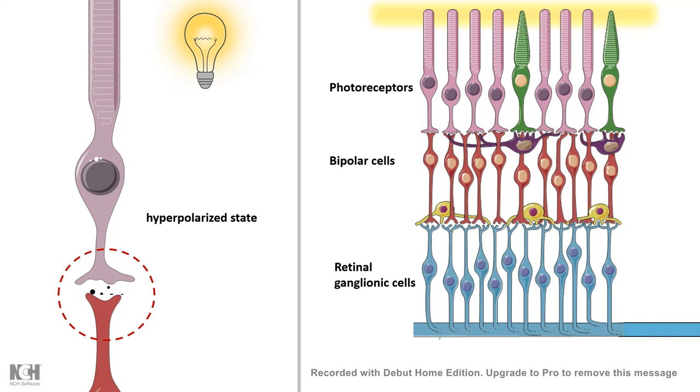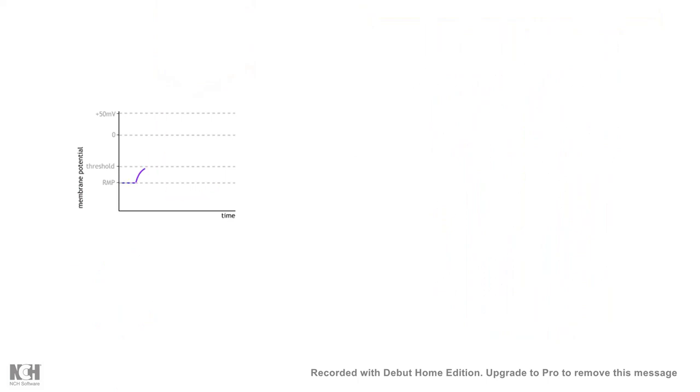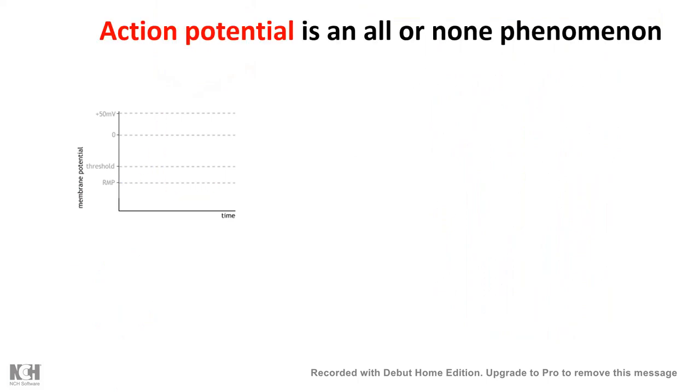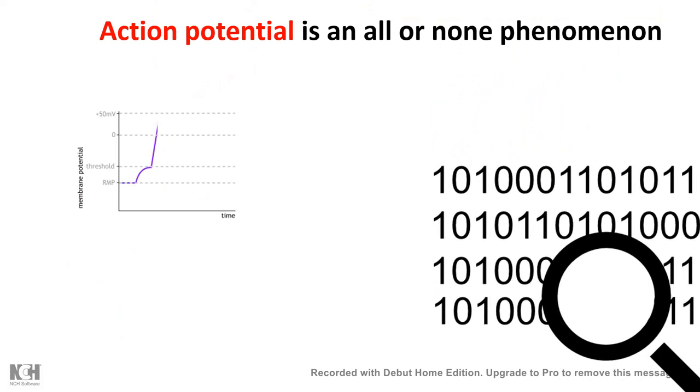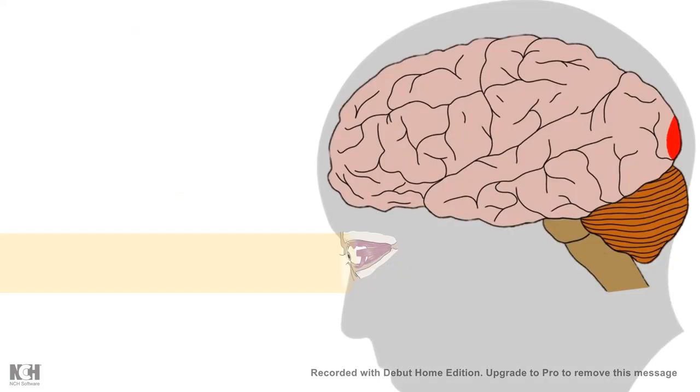You might be thinking, in a hyperpolarized state, how does the neuron send the signal to the brain? How is it possible? Action potential is just an all-or-none phenomenon, similar to binary code. In binary, one has a value and zero also has a value. Similarly, having action potential means something and also not having action potential means something as well. So, when there is a suppression of activity in response to light, that leads to a higher-order signal in our visual cortex, which is located at the backside of our brain. And that is processed by higher-order brain centers, and that's how our visual perception is created in the visual cortex.